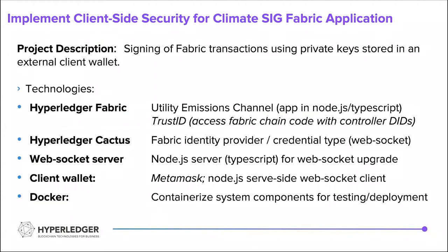Essentially, what we were trying to achieve in this project was being able to sign Fabric transactions on a private blockchain network using private keys that are stored externally — not on the peer servers within the Fabric network — thereby providing client-side security.